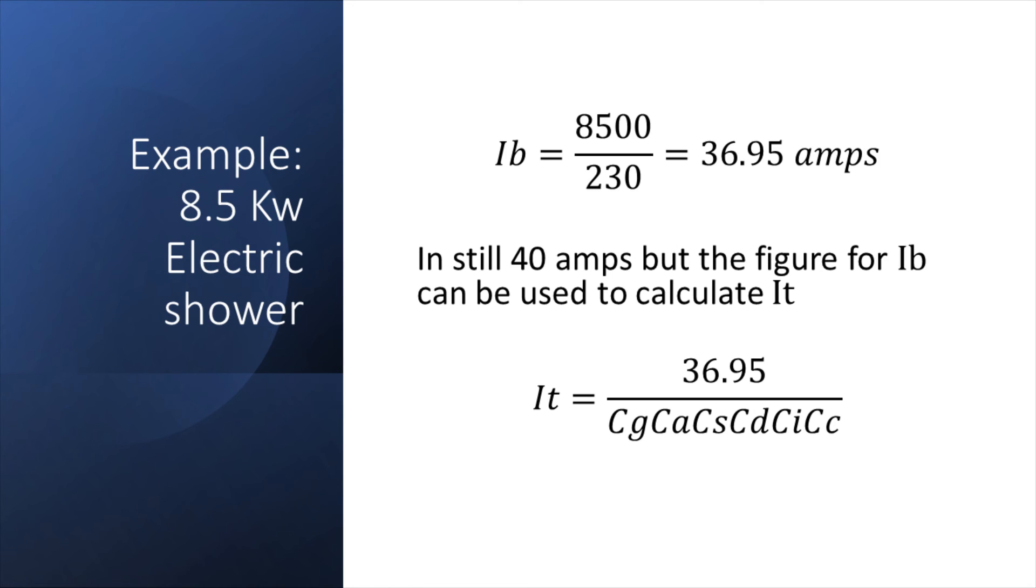In this next example, I've got a calculation for an 8.5 kilowatt electric shower. In the calculation for design current, I've got 8500 divided by 230, which gives us 36.95 amps. In this situation the design current is lower than the protective device. The protective device IN would be 40 amps, but the figure for IB can be used to calculate the IT. So the IT for the cable is equal to 36.95 divided by the correction factors, and that will give us our value for IZ.